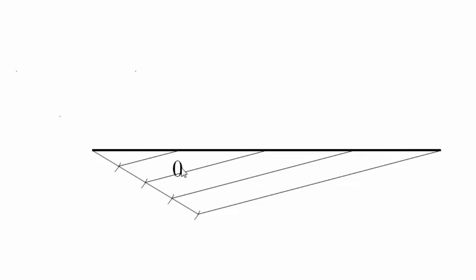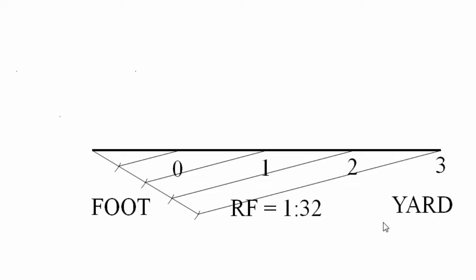Each division represents a distance of one yard. Place zero at the end of the first division, then label 1, 2, and 3. The main unit is yards. Write RF in between, and label the leftmost division with the smaller unit — foot — noting that one yard equals three feet.